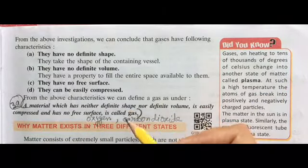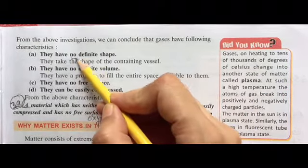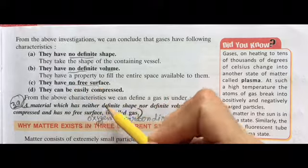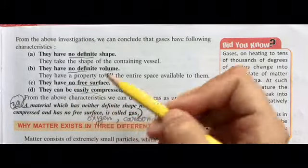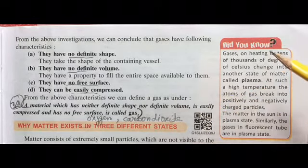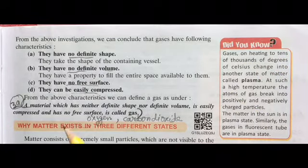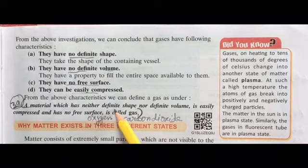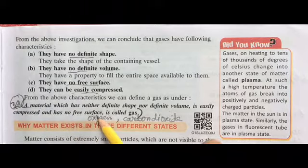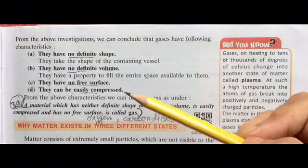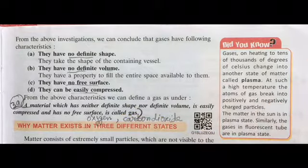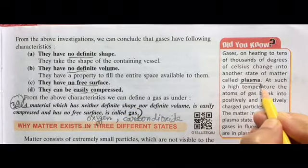The third state is gaseous state, which has neither fixed shape nor fixed volume, nor any free surface. And they can be compressed. We cannot compress solid or liquid, but gases can be easily compressed. So the definition is: a material which has neither definite shape nor definite volume and can be easily compressed. It has no free surface. If you fill air in a balloon, unless the balloon is closed properly from all sides, air will not remain inside.